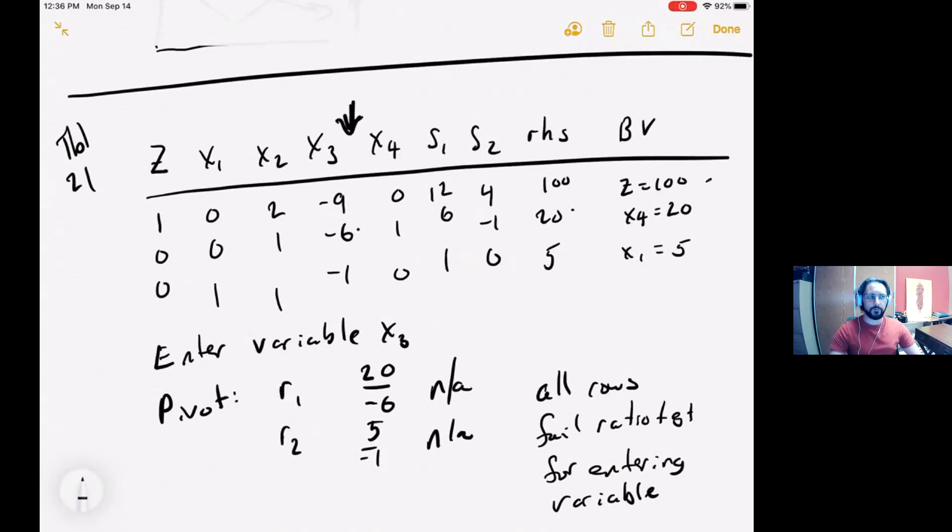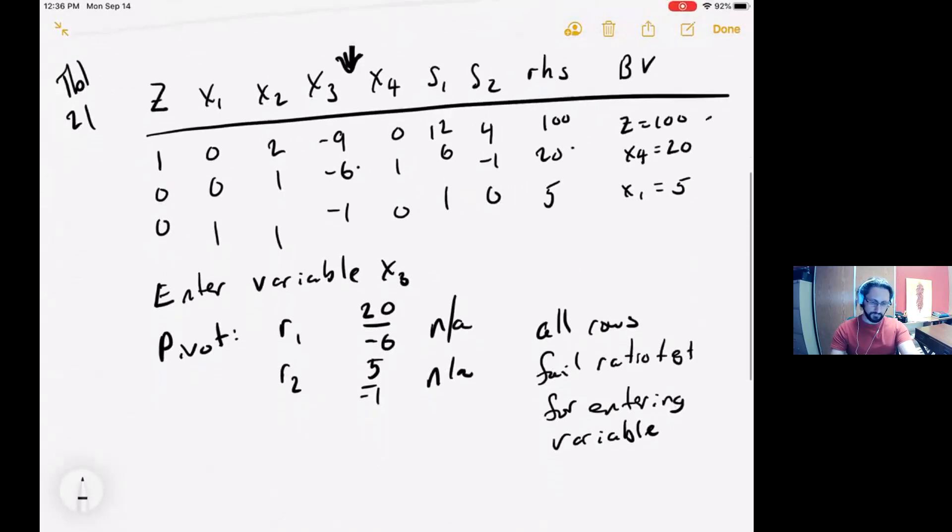After this, we'll perform the ratio test to see which row becomes the pivot row. Taking the ratios of coefficient to right-hand side, 20 over negative 6 and 5 over negative 1, we need these ratios to be positive to choose the smallest one, but unfortunately they're both negative, so neither one allows us to take a ratio according to the simplex method.